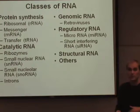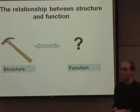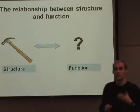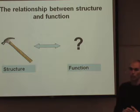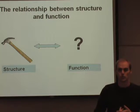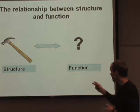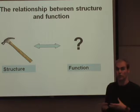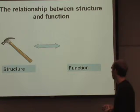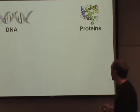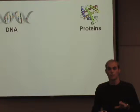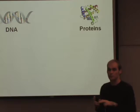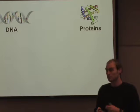We're going to look at some of these classes but not in great detail. What we want to understand is how RNA can fulfill all these different types of cellular activities within a cell, and a large part of that is the relationship between structure and function. On this slide you have a picture of a hammer, and you can see the structure or shape of this hammer is well suited for its function of hammering a nail.